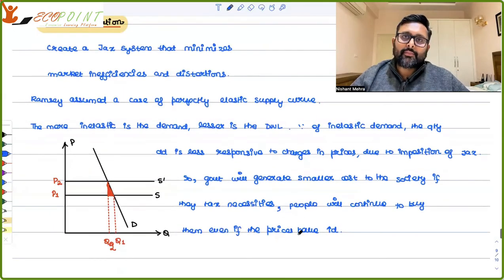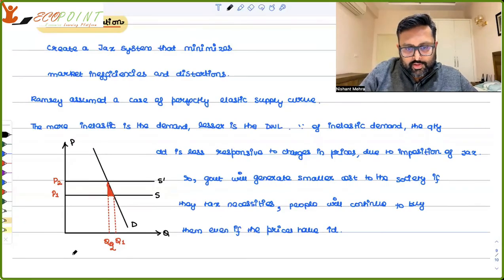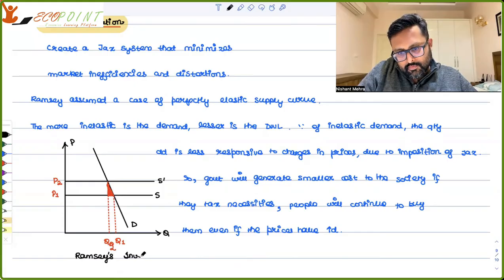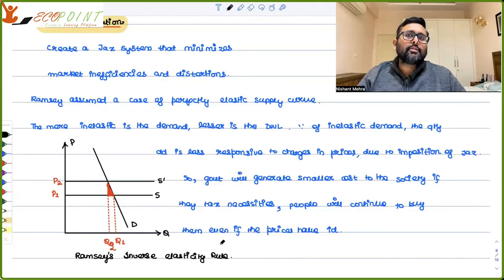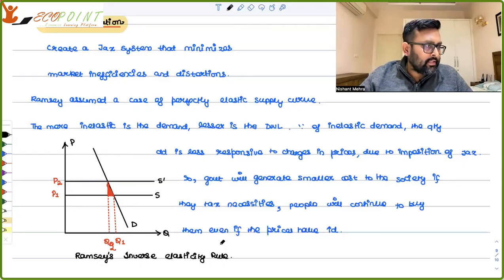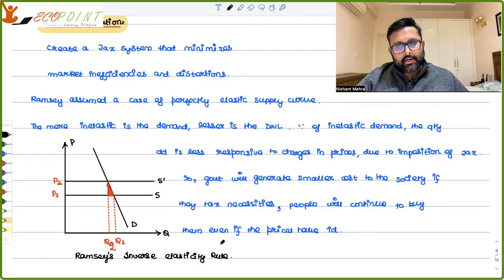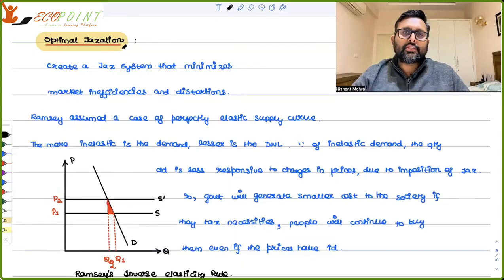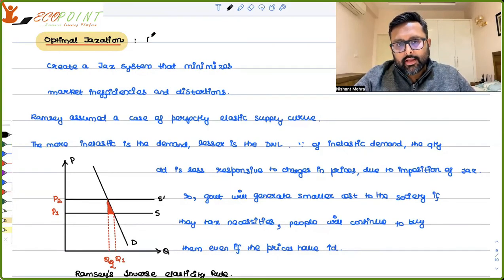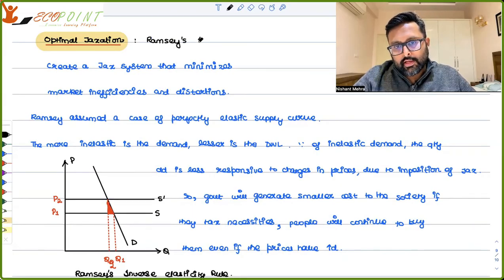This is Ramsey's inverse elasticity rule. What is Ramsey's inverse elasticity rule? It says: tax more of those goods which have lesser elasticity. The tax on goods should be inversely related to the elasticity of demand. This is optimal taxation — a very simplified and general version. I've given you the idea of Ramsey's inverse elasticity rule.